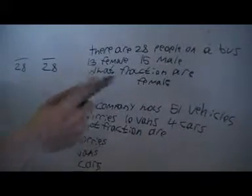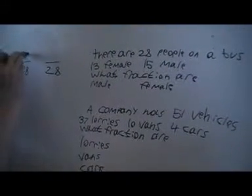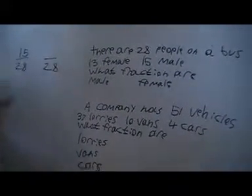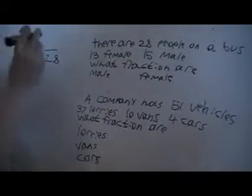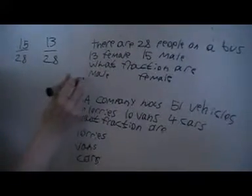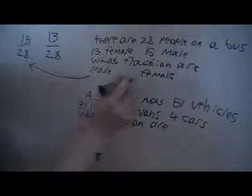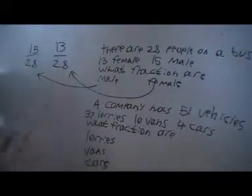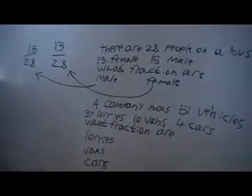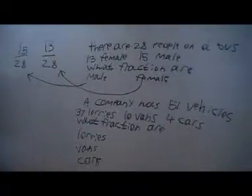We've got 15 males, so that's going to be 15 over 28. And we've got 13 females, so that's going to be 13 over 28. Those are the answers to that problem.